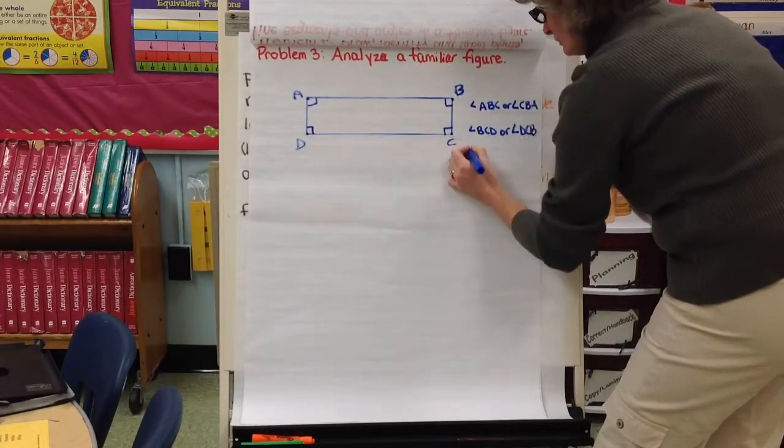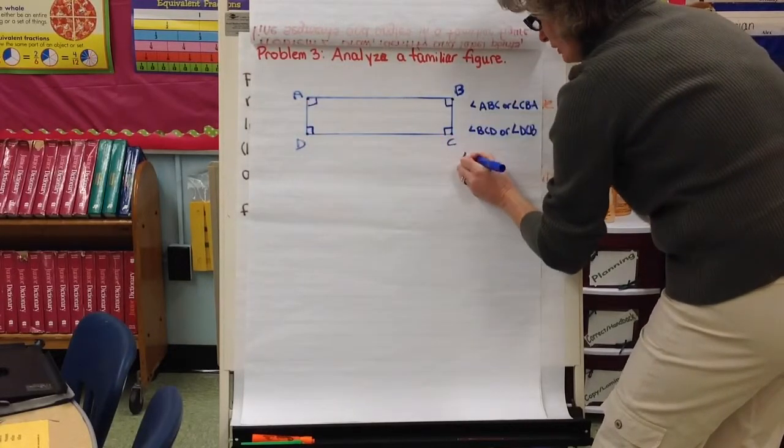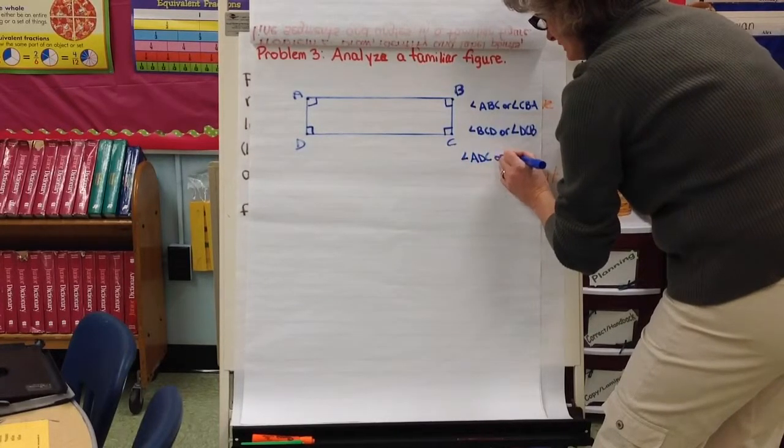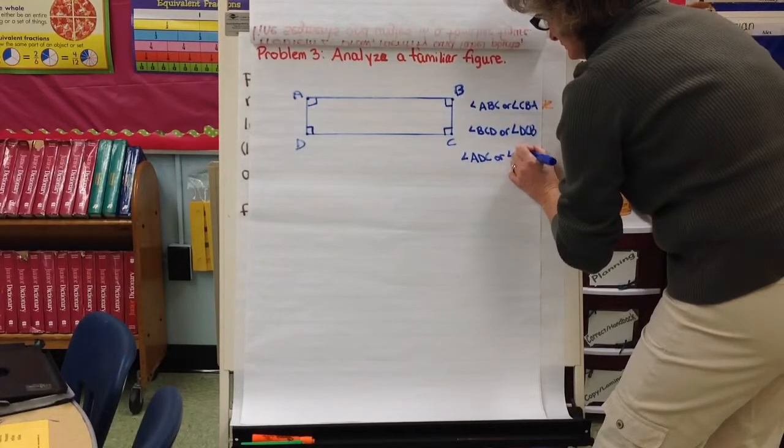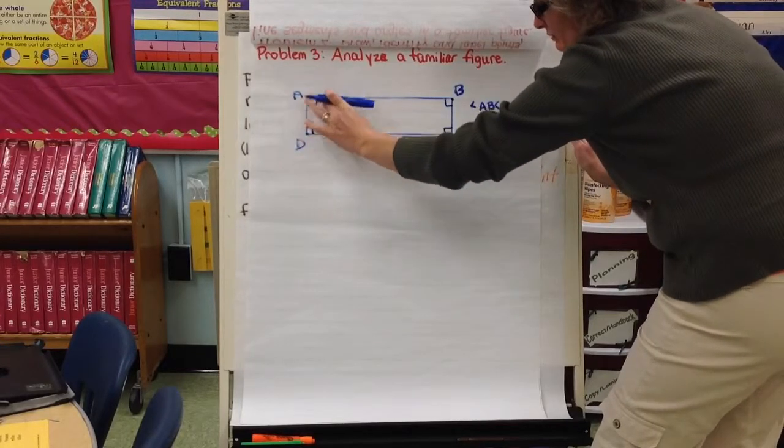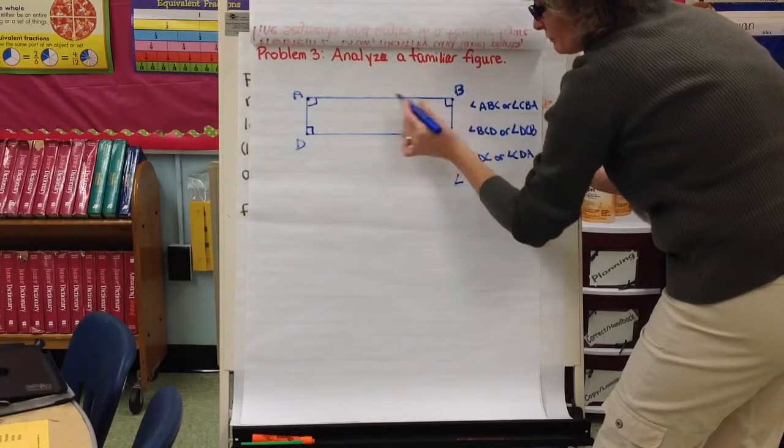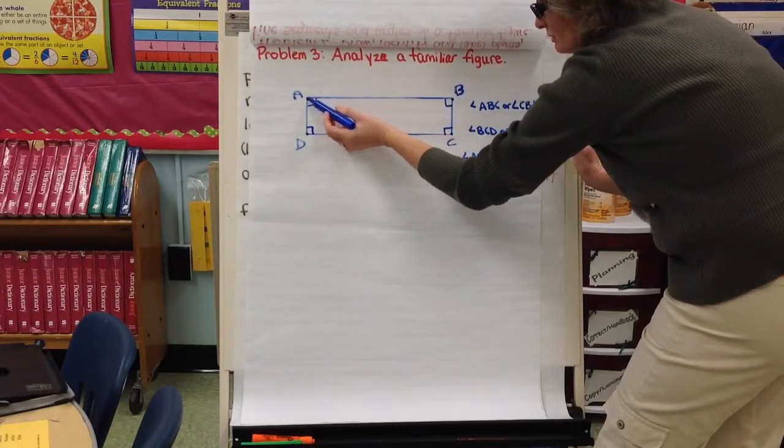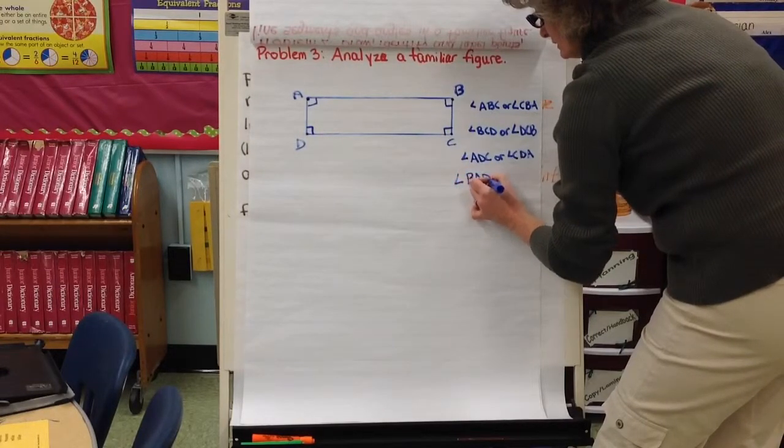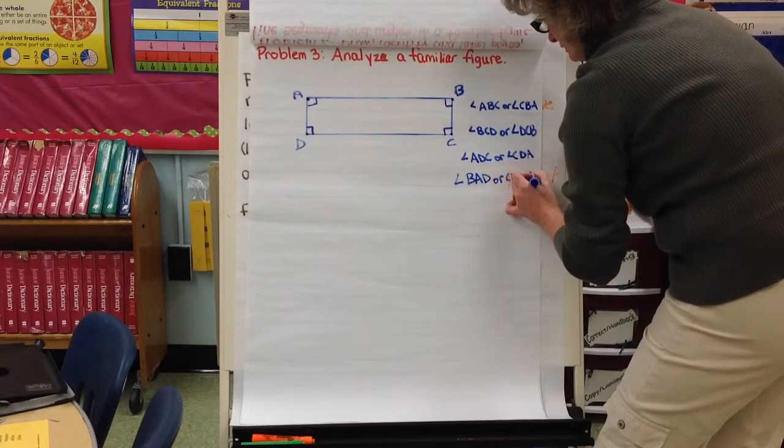Let's go ahead and name this angle. Remember, the D has to be in the middle. So it's A, D, C is one possibility. Or angle C, D, A. Let's look at the last one. There's where the two line segments meet. That has to be in the middle. So it's B, A, D, or angle D, A, B.